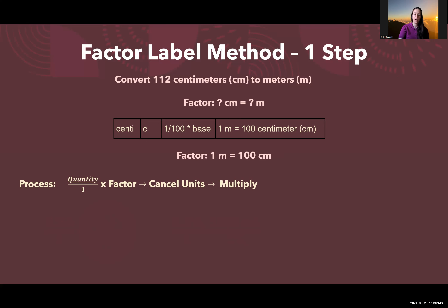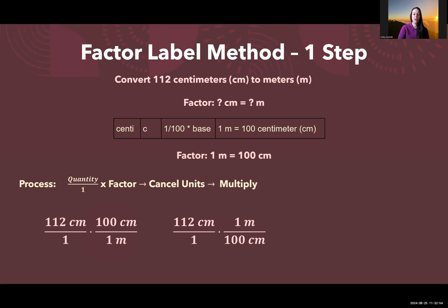Again, the process is quantity times factor, canceling units, followed by multiplication. We have two options. On the left, we have both centimeters on top, so this is an inappropriate setup because it won't allow us to cancel out the unit of centimeters.